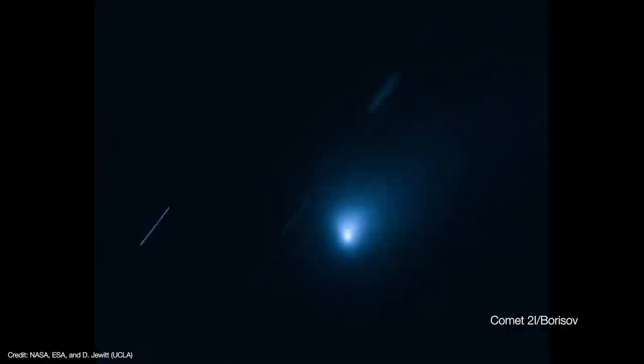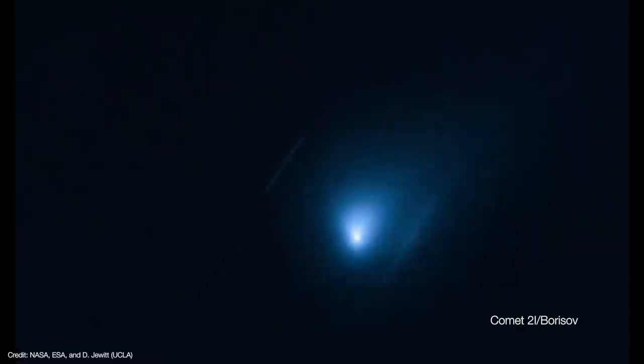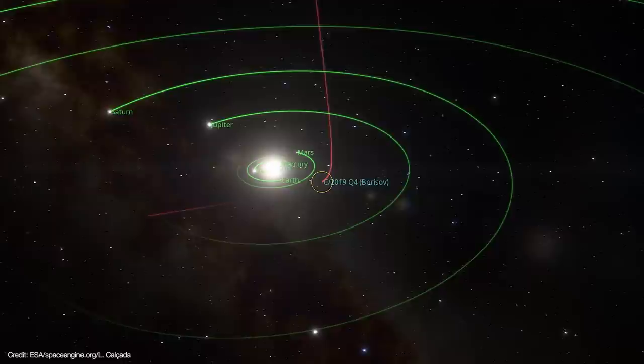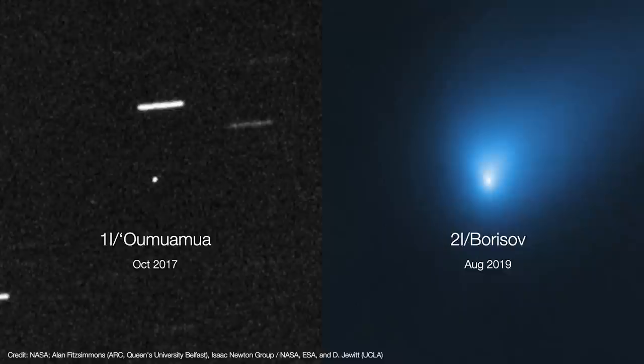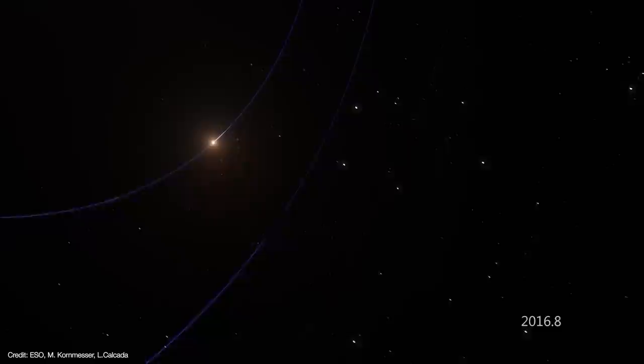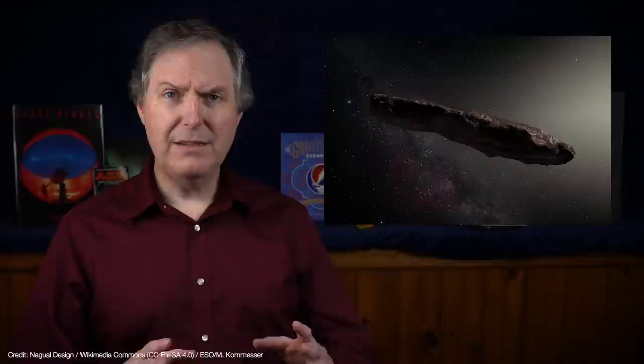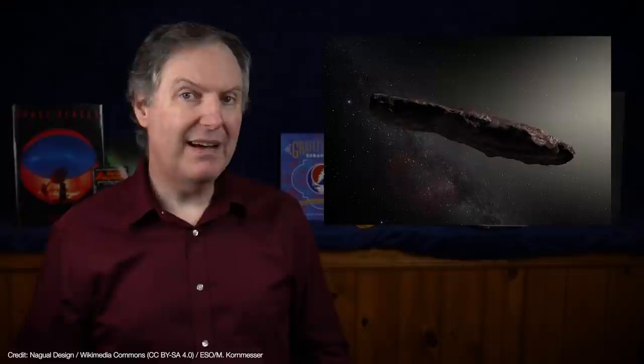But as if to demonstrate that Oumuamua was not a comet, a second interstellar visitor, 2I Borisov, was discovered in August of 2019. This object was very much a comet. The only thing that gave away Borisov's interstellar origin was its hyperbolic orbit. The fact that these two objects were discovered within two years of each other implies they must be part of a population of perhaps millions of interstellar objects passing through the solar system. But while Borisov was very much a comet, Oumuamua was very much not. And it wasn't an asteroid either. It was a thin, broad, shiny, reddish, tumbling object that somehow accelerated on its way out of the solar system.